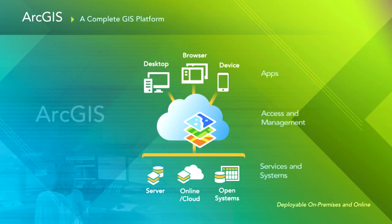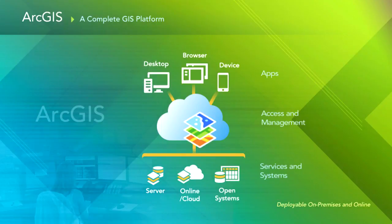As Jack mentioned, ArcGIS is a complete, services-oriented GIS platform. At the bottom we have the servers, the cloud, and open systems producing those services, which are then consumed through apps. Unlocking the value of ArcGIS means deploying apps — we all know the benefits of using GIS: spatial analysis, making better decisions. The more people using GIS directly via apps that work on any device, anywhere, at any time, the more value you unlock. Whether desktop apps, browser-based apps, or on any device, we want to show how easy it is to deploy these apps and how you should be doing that across your organization.